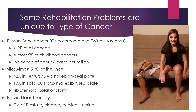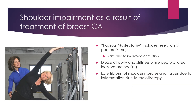If you're working with a patient like this girl, you would be working on prosthetic training. Another unique problem is pelvic floor therapy, which is frequently needed with cancer of the genital, urinary, or reproductive systems. If you are working with patients recovering from breast cancer, shoulder problems are frequently what you'll be addressing. Shoulder impairment as a result of treatment of breast cancer is common. In the past, radical mastectomies were more common.